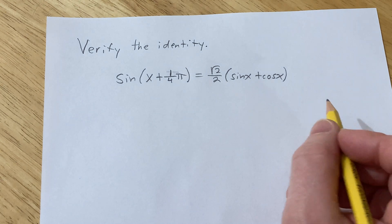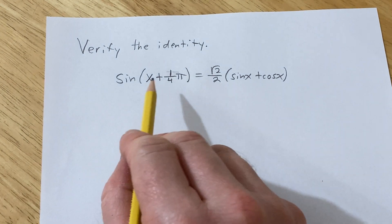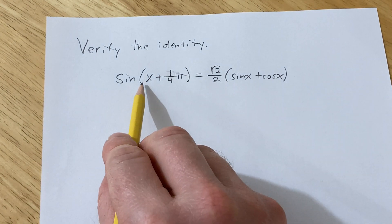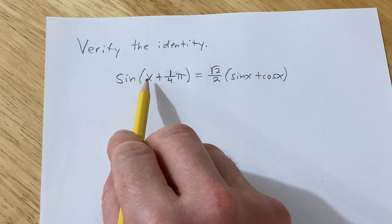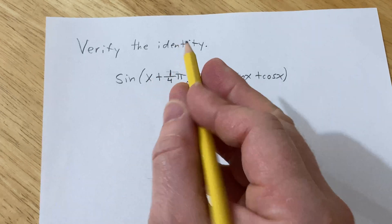Hello, in this problem we're going to try to verify this identity. To do this, we're going to use an identity for the sine of a plus b.